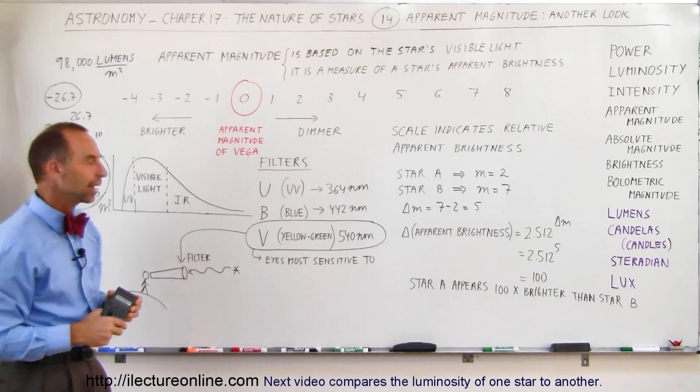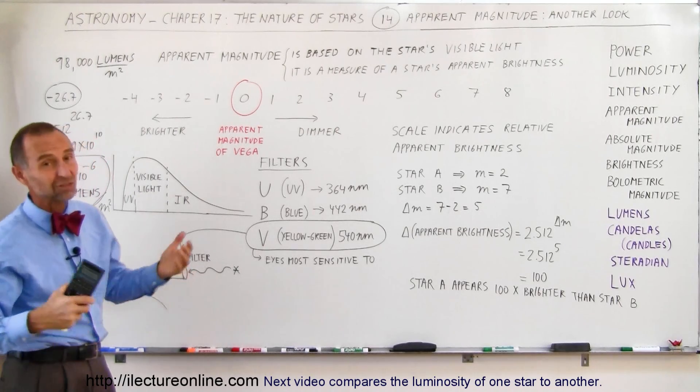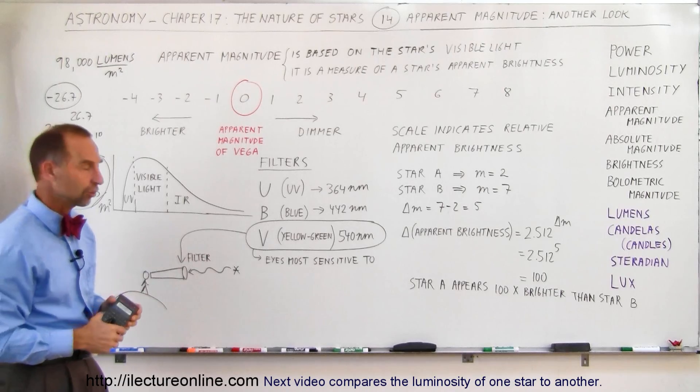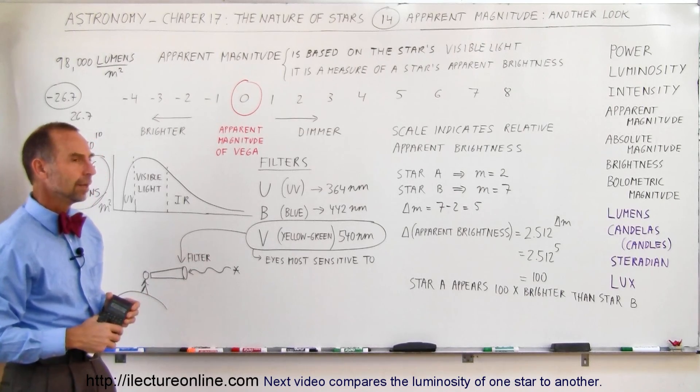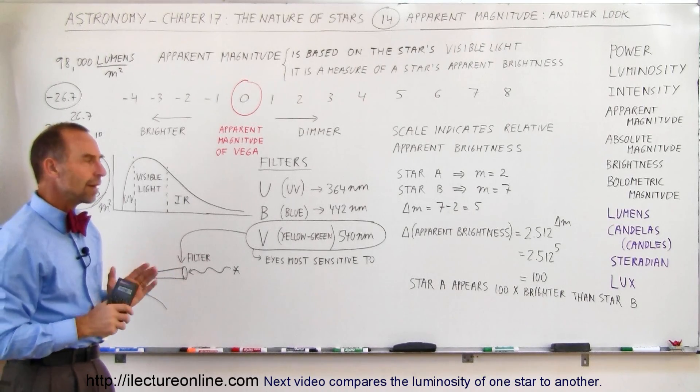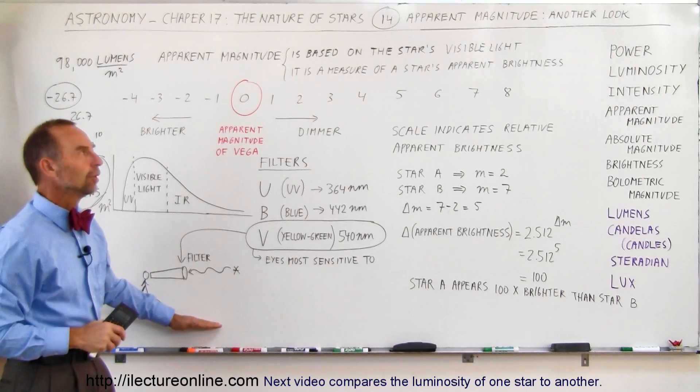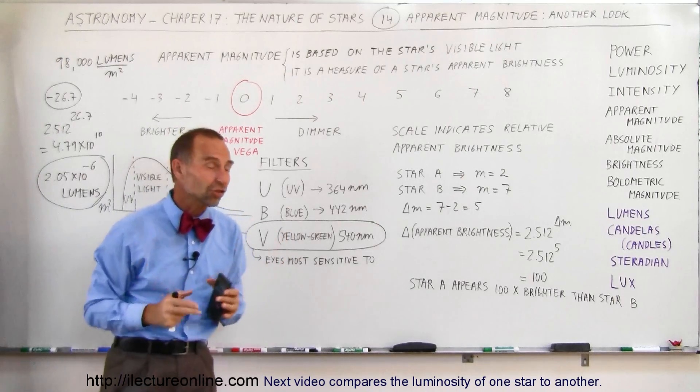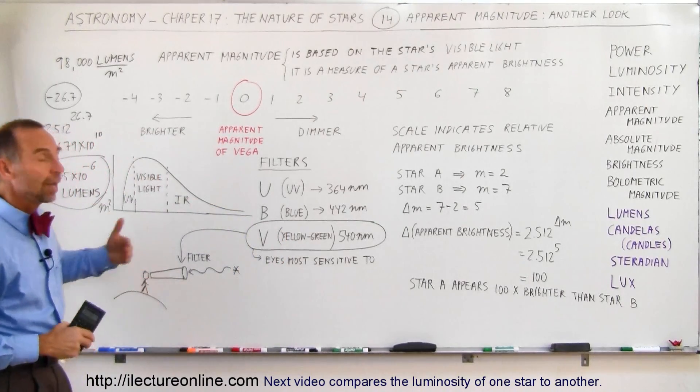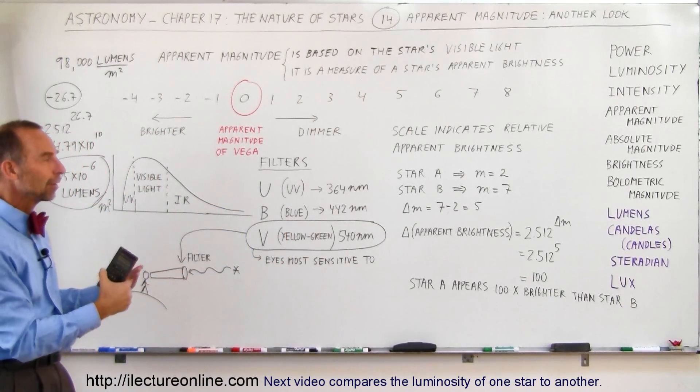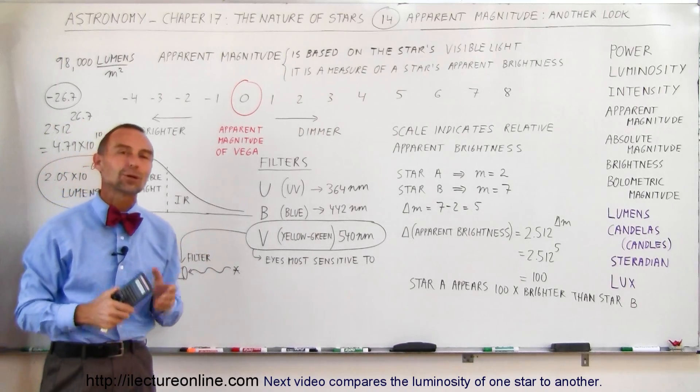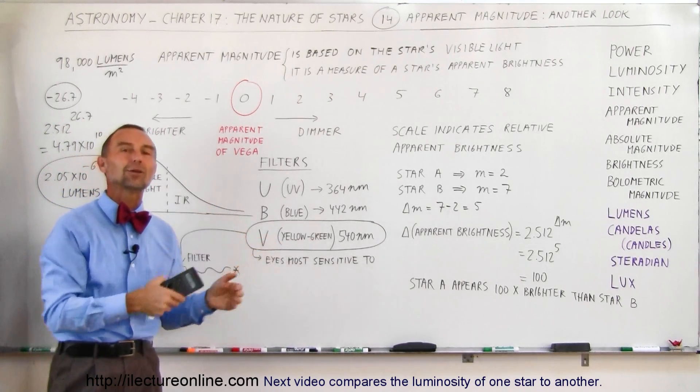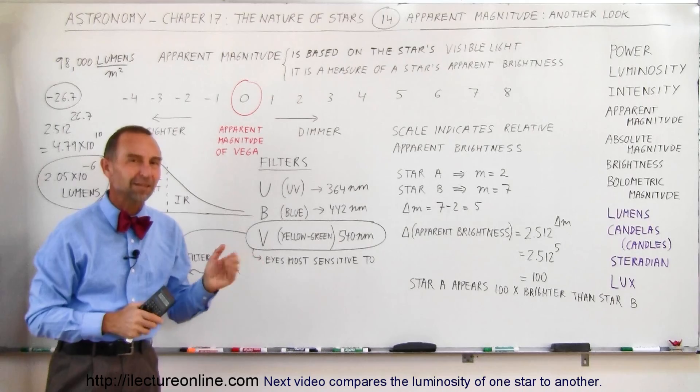And that's how we find the apparent magnitude of different stars and different objects, such as galaxies or star clusters or nebulas and things like that. So that's how we figure out the apparent brightness and the apparent magnitude. And that's what we mean by taking another look at that. Now we have a pretty good understanding where that came from and what it means. And now we can compare that to what we do in the next video. We'll compare it to the absolute magnitude and other things such as that.